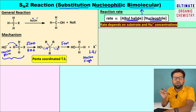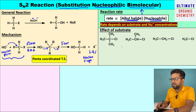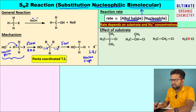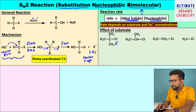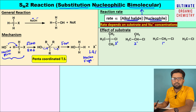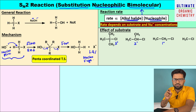Now let us discuss the effect of substrate in SN2 reaction. I have given four molecules: the first is tertiary butyl halide (an example of tertiary alkyl halide), the second is isopropyl chloride (secondary alkyl halide), the third is ethyl chloride (primary alkyl halide), and the fourth is methyl chloride (methyl halide). We need to find out which is more reactive and which is less reactive in SN2 reaction.